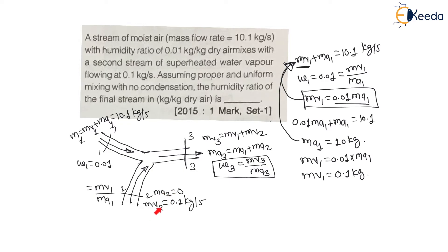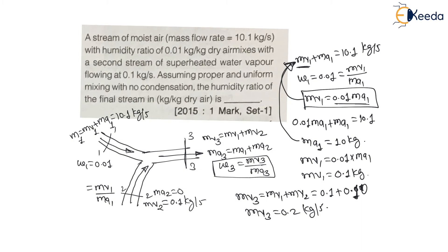Now we can find the final stream values. Mass of vapor 3 = mass of vapor 1 + mass of vapor 2 = 0.1 + 0.1 = 0.2 kg per second. Since mass of air 2 is zero, mass of air 3 = mass of air 1 + mass of air 2 = 10 + 0 = 10 kg per second.